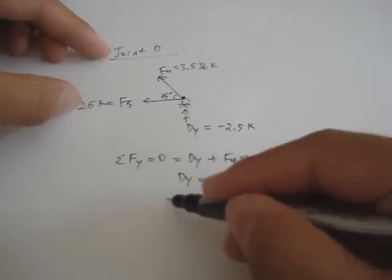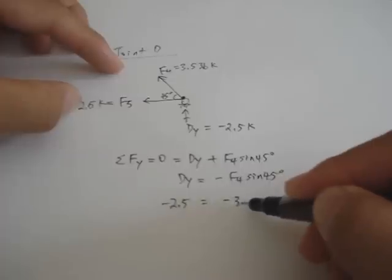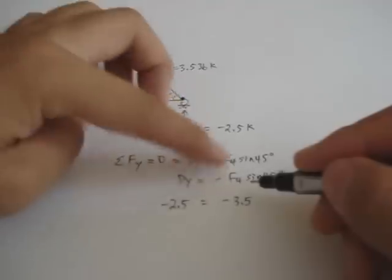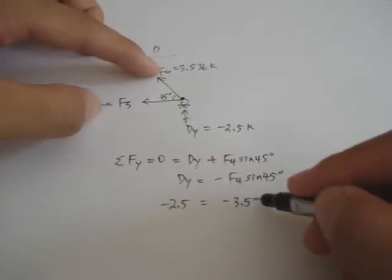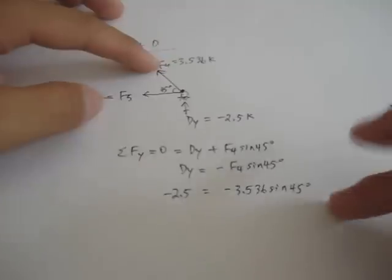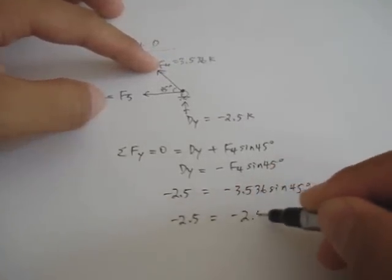Now, let's see if that's true. DY is minus 2.5. And F4 is negative, negative. And F4 is 3.536 sine of 45. Plug down your calculator. And it is indeed minus 2.5 kips.